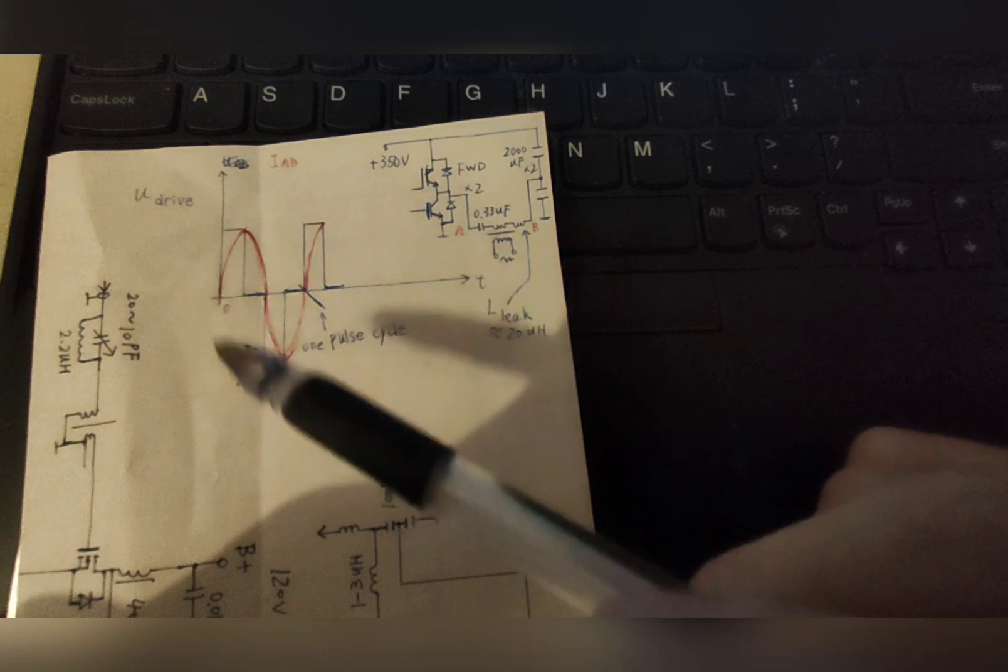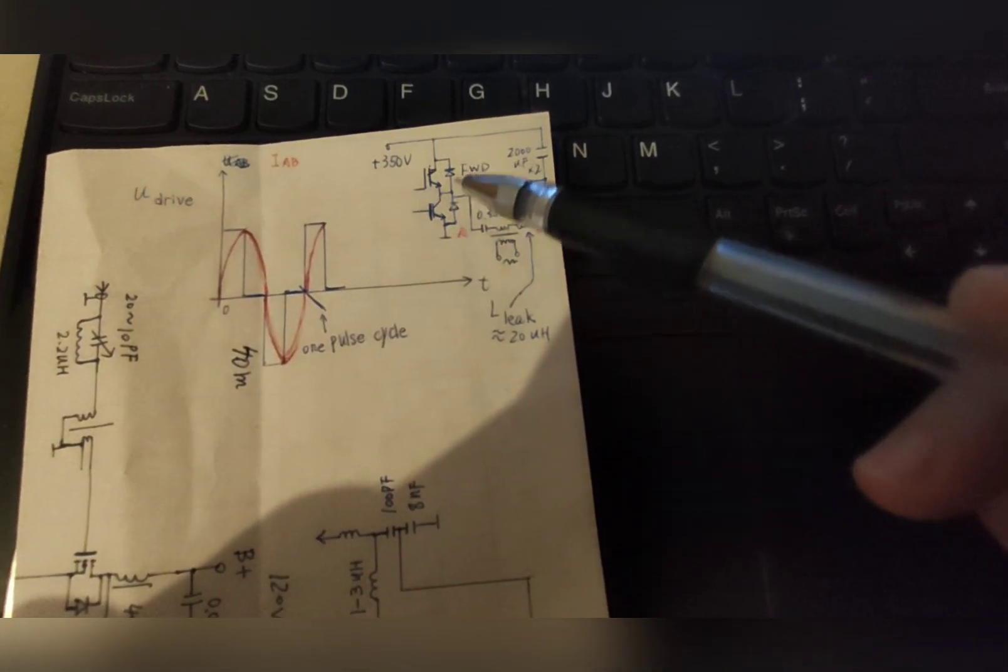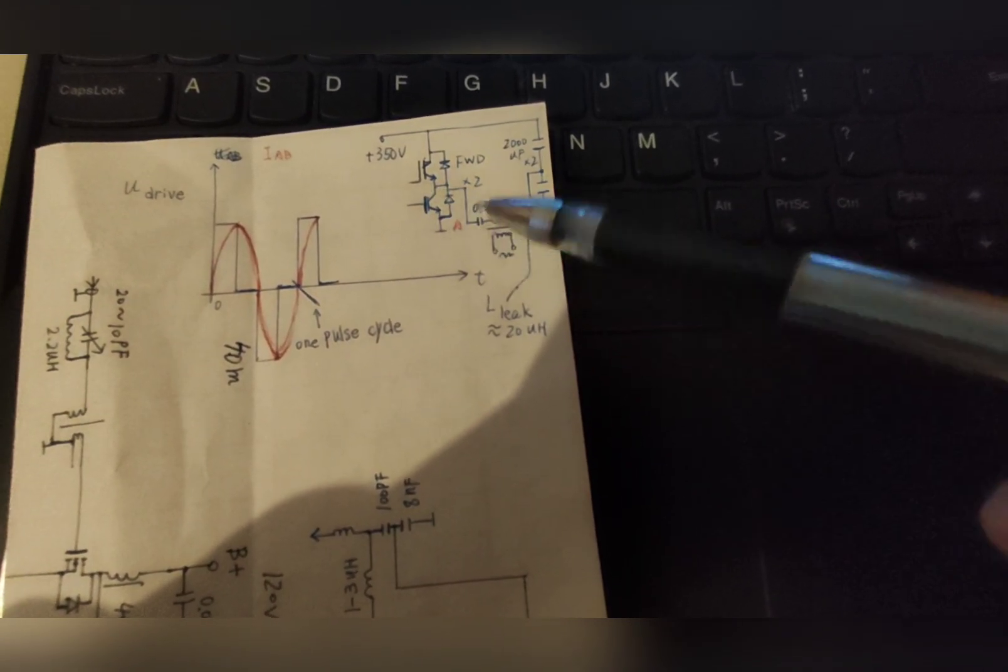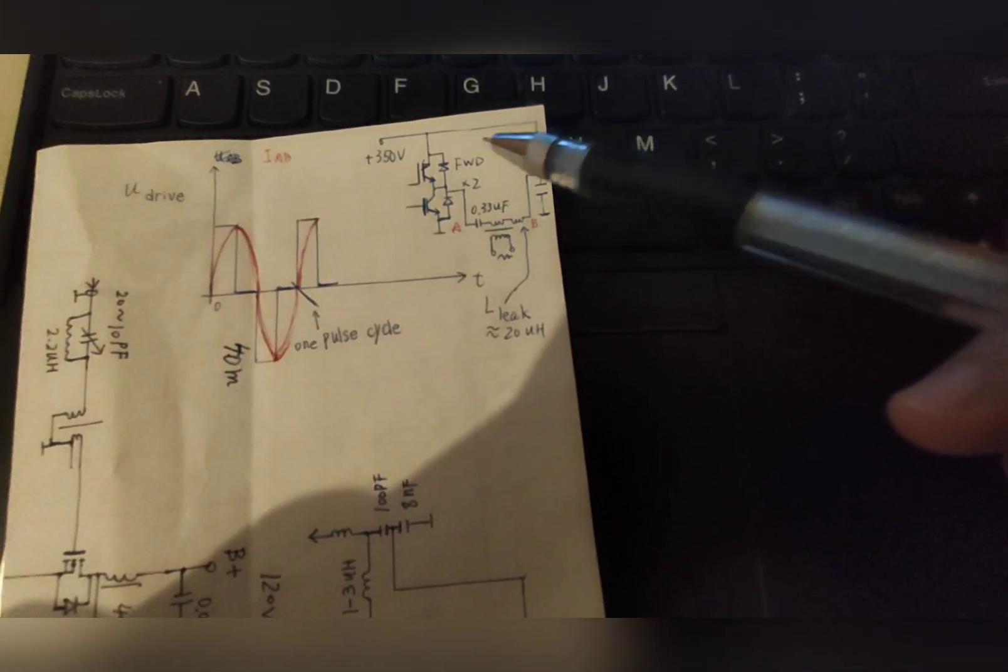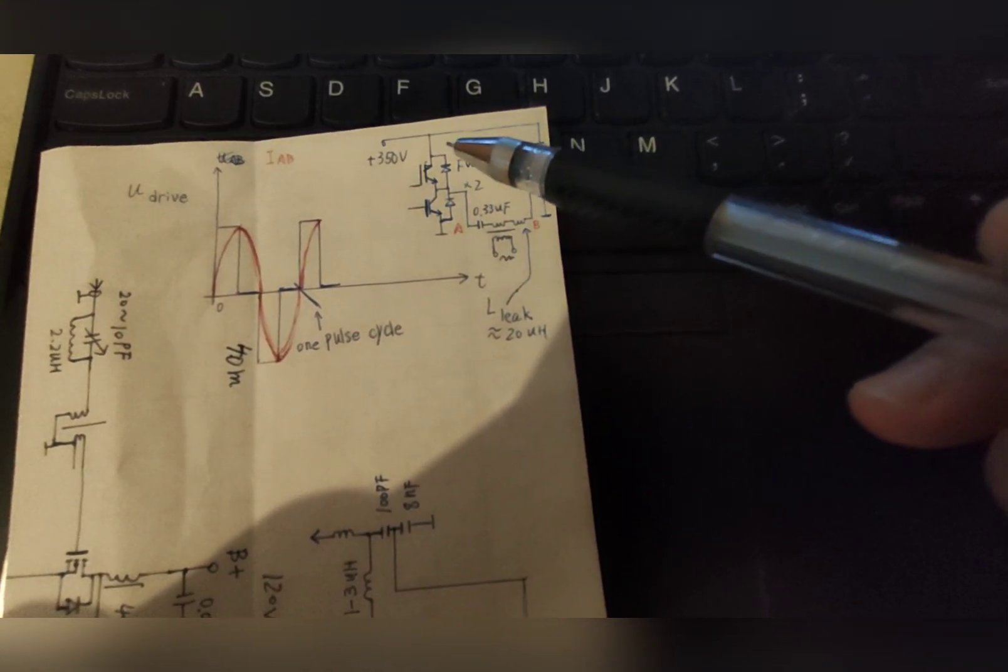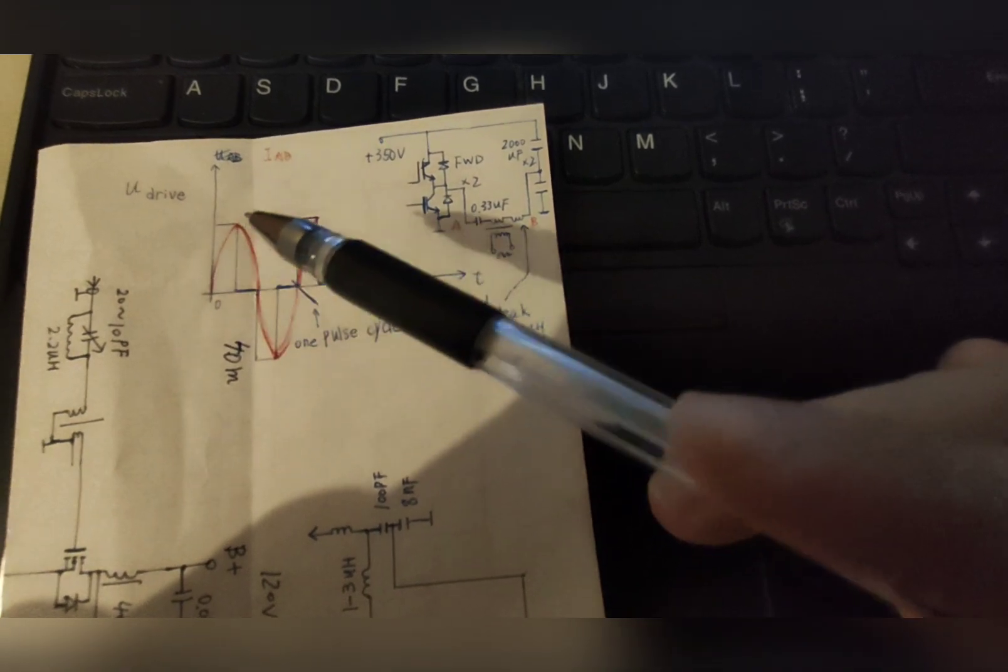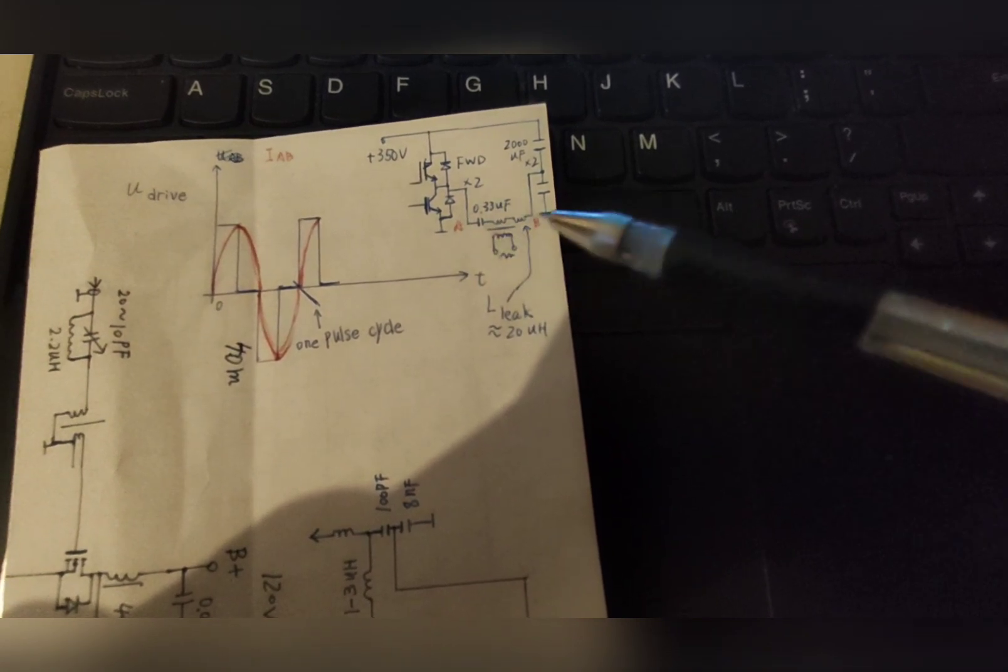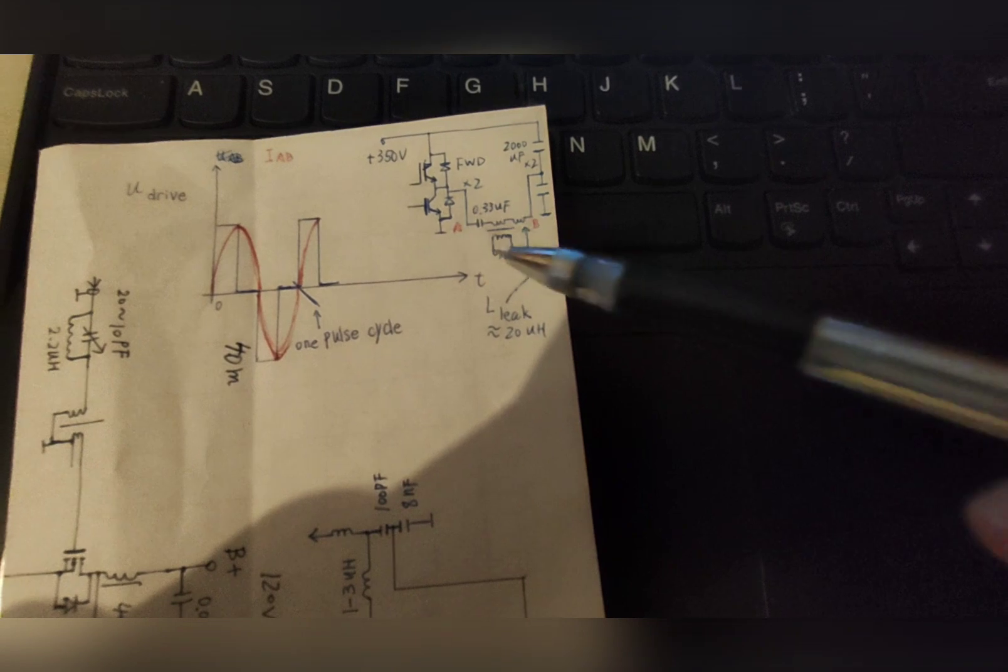First, let's imagine that the first pulse turns on the upper IGBT and the lower one stays off. So the current in the resonant circuit goes counterclockwise like this. The red line here is the current from A to B or from B to A, the current in the tank circuit.